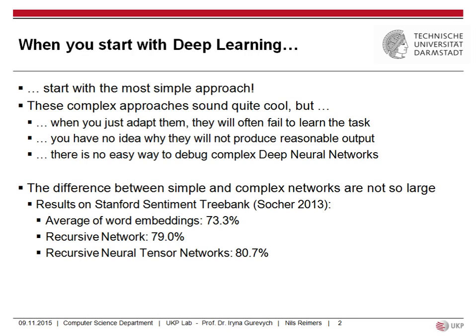When you start to use deep learning or dig into the field, always start with the most simple approach. These complex approaches you read in papers always sound really cool, and you really want to use this super complex classifier. But when you just adapt them, they will often fail to learn the task and produce no reasonable output. There's no easy way to debug complex deep neural networks - you run them and get no output or always the same output, and you have no idea why.